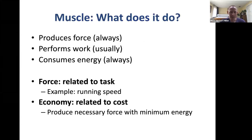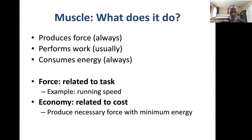What does muscle do? It always produces force when the nervous system asks it to, and it usually performs some work while producing that force. Regardless of whether it performs work, muscle consumes metabolic energy. As effort level increases — say running faster from a slow jog to a max sprint — the amount of force and work needed from your muscles increases. But we're not always just interested in maximizing output; sometimes we're interested in the economy — the ratio of work produced to energy consumed.